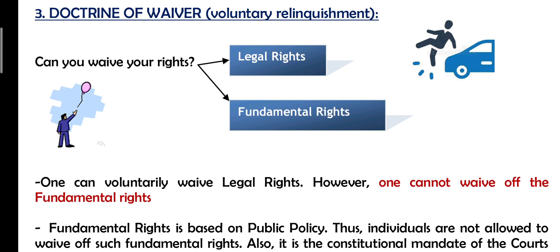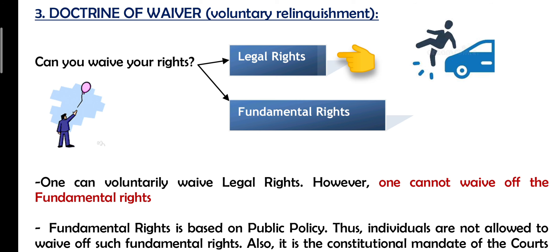The last doctrine is the Doctrine of Waiver. Waiver means voluntary relinquishment. Now, there are two types of rights: legal rights and fundamental rights. Let's understand this with a hypothetical example.